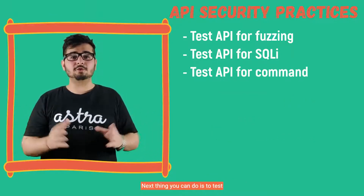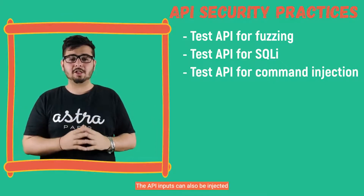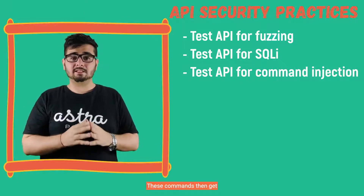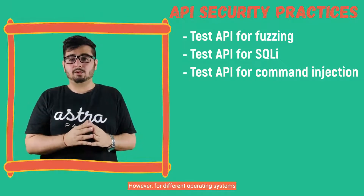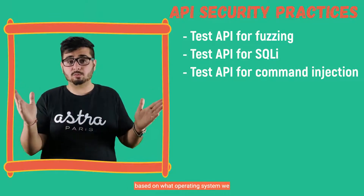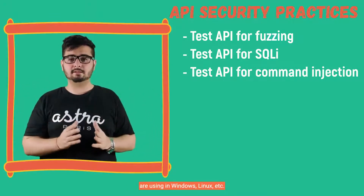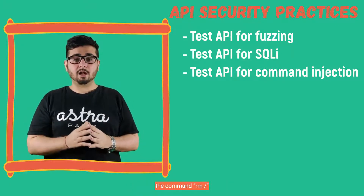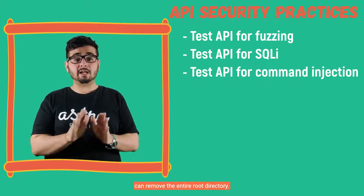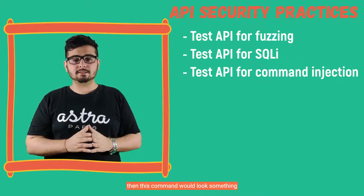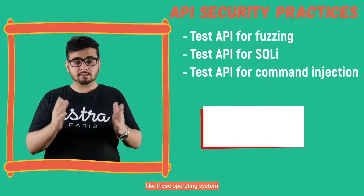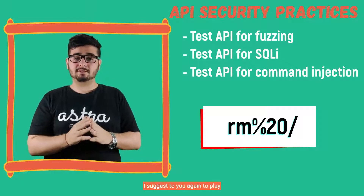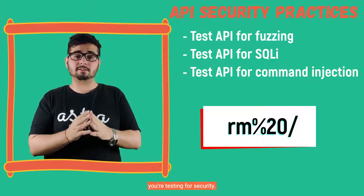Next, test API for command injection attacks. The API inputs can also be injected by various operating system commands, which then get executed on the server. For different operating systems — Windows, Linux, etc. — these commands would be different. For instance, for a Linux system, the command rm slash can remove the entire root directory. When URL-encoded, this command would look something like that. These operating system commands might not work as-is; I suggest playing with different payloads while testing for security.